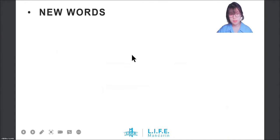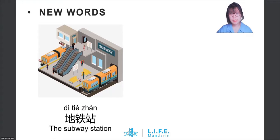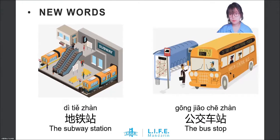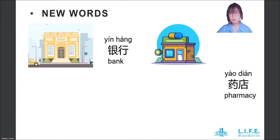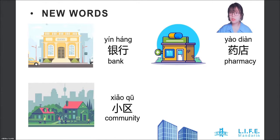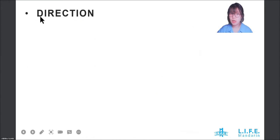Let's see some new words first. 地铁站 (subway station), 公交车站 (bus station), 银行 (bank), 药店 (pharmacy), 小区 (residential compound), 大厦 (building/tower). And next are some direction words.